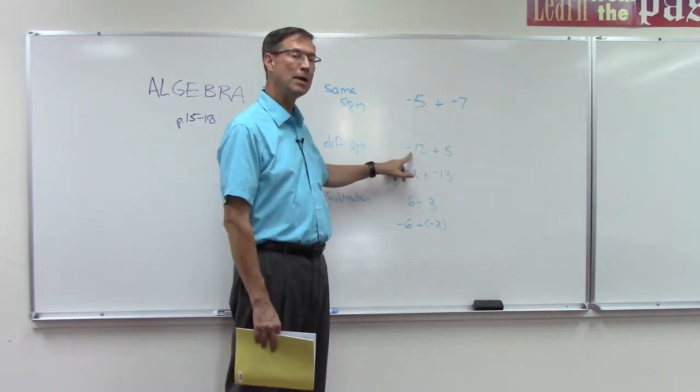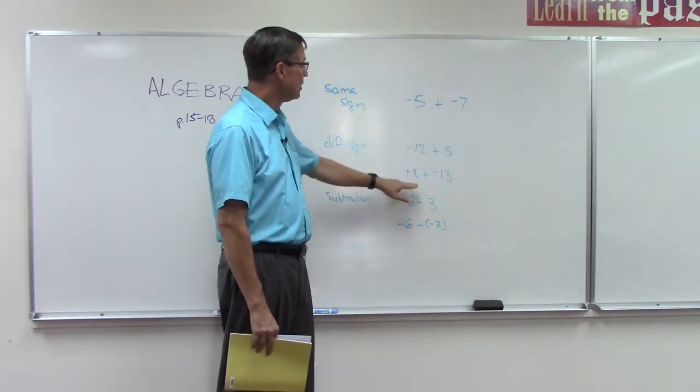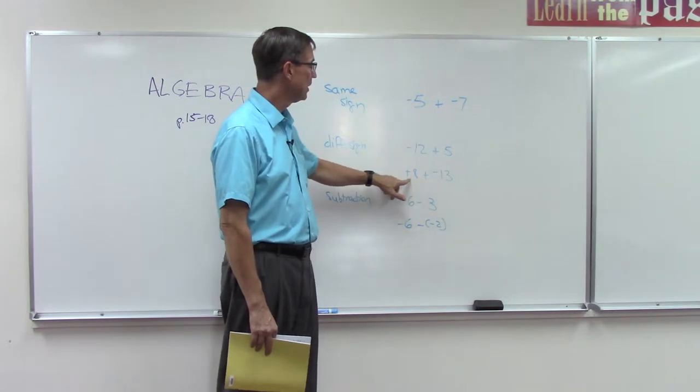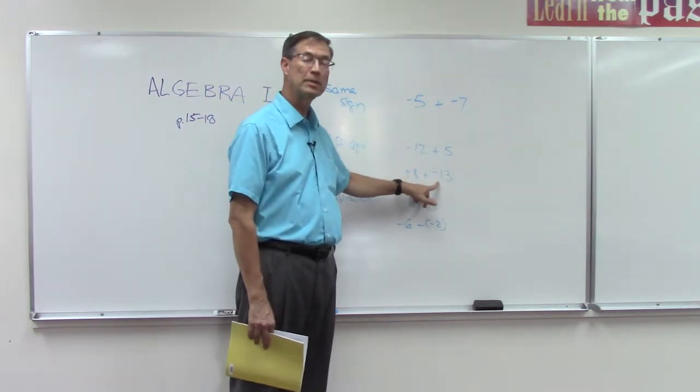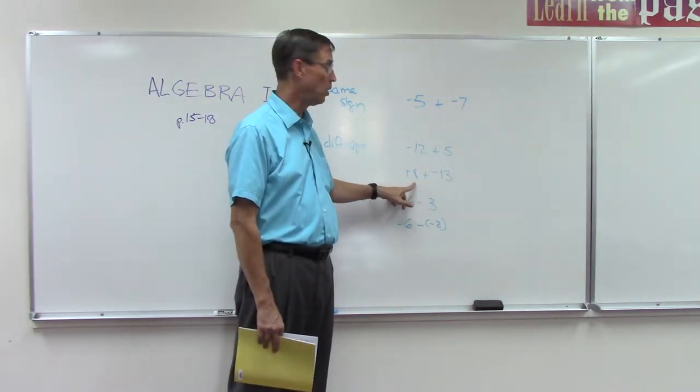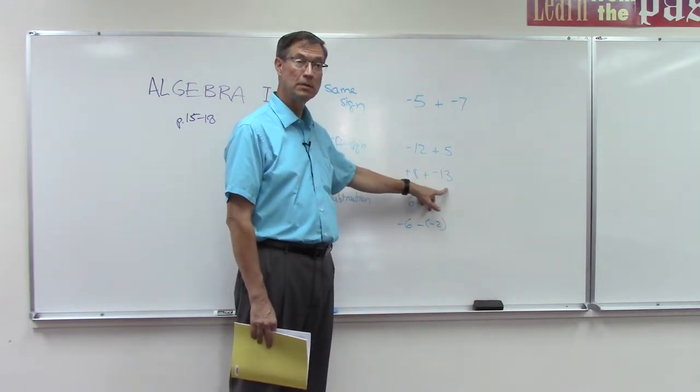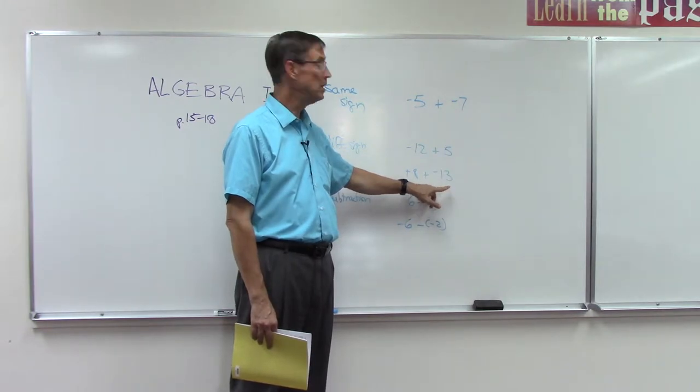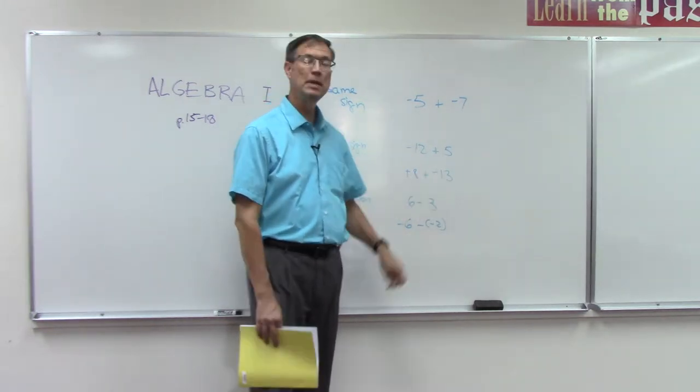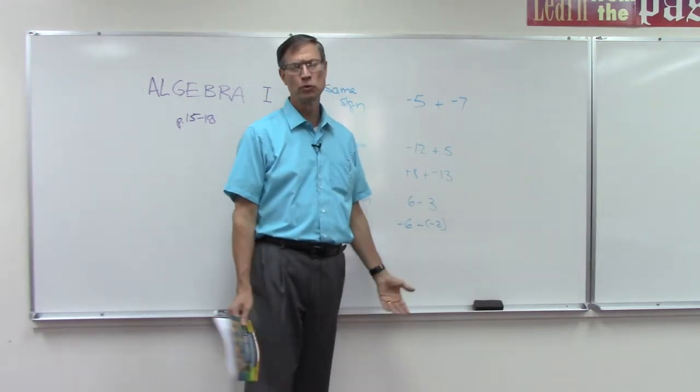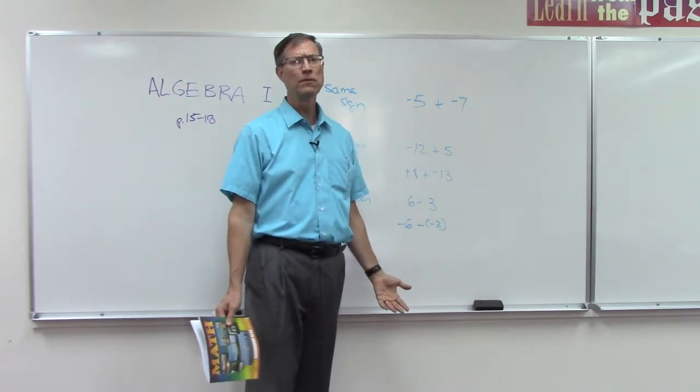So here I'm adding and the signs are different, one's positive, the second one's negative. Subtract the smaller 8 from the larger 13, so we get 5. Keep the sign of the larger, so that would be negative.